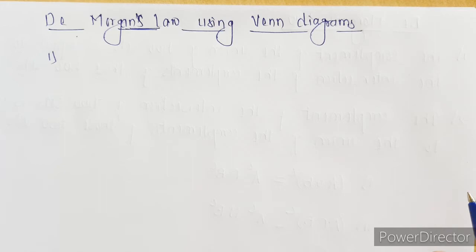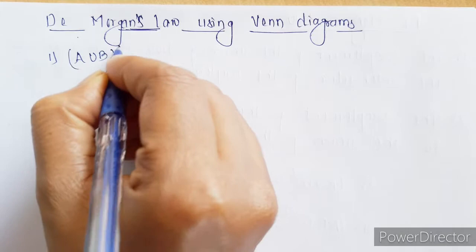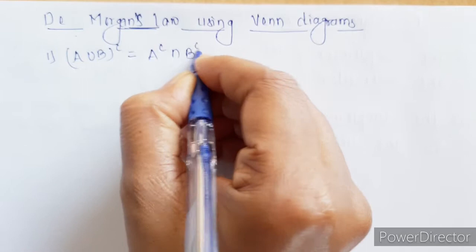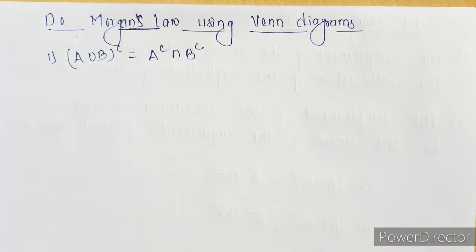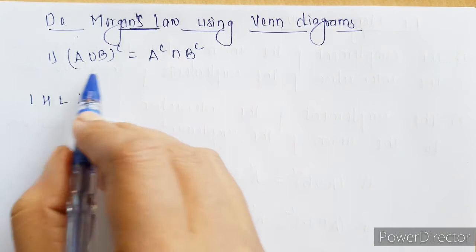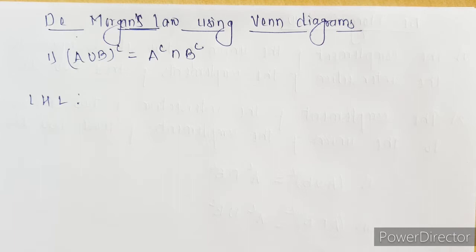The complement of the union of two sets is nothing but A complement intersection B complement. Same as the last example, let me start with the left hand side. In the left hand side we have A union B complement. So for getting A union B complement, first we have to find A union B.